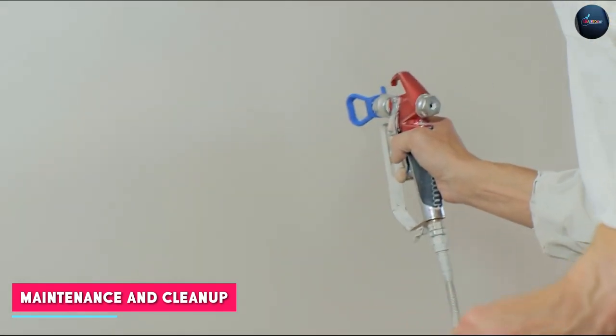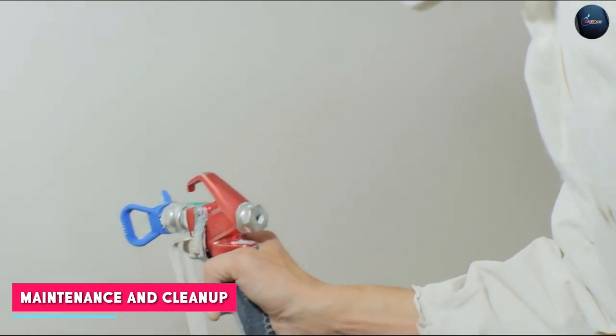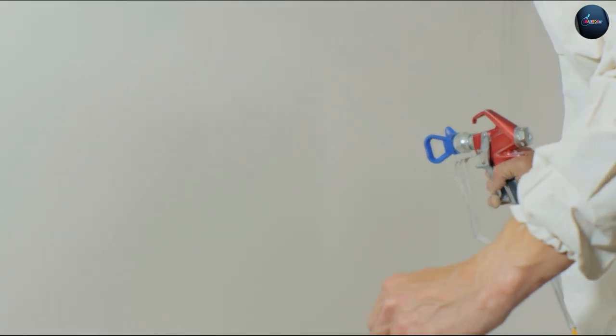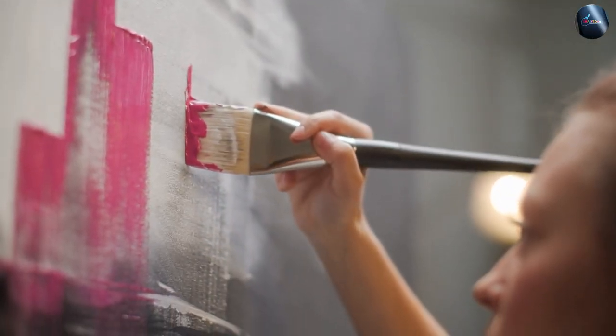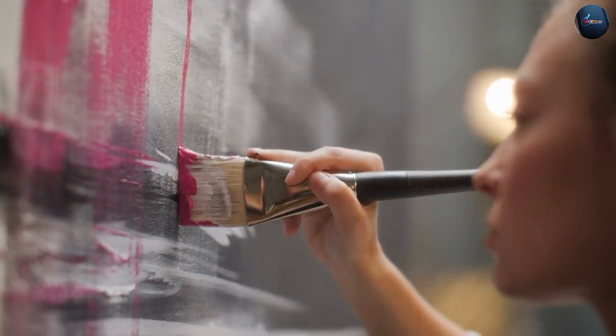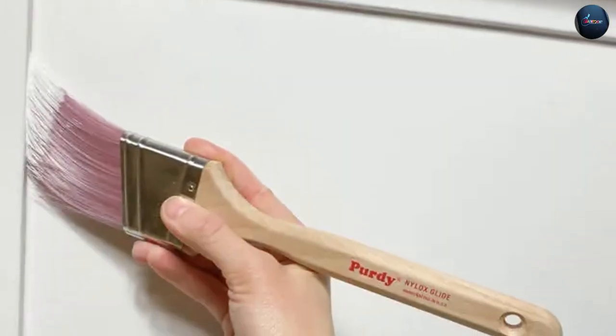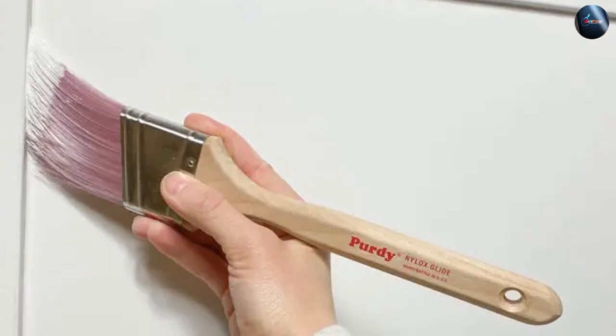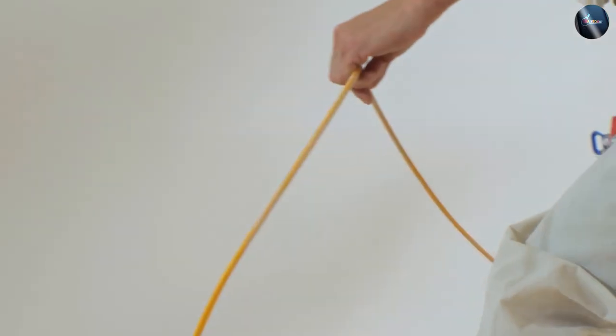Airbrushes require thorough cleaning and maintenance after each use. Disassembling the airbrush, cleaning the components, and ensuring proper paint consistency are necessary steps to maintain its performance. Paintbrushes also require cleaning, but the process is generally simpler, involving rinsing the brushes and removing excess paint. Paintbrushes can be easily stored and reused with proper care.